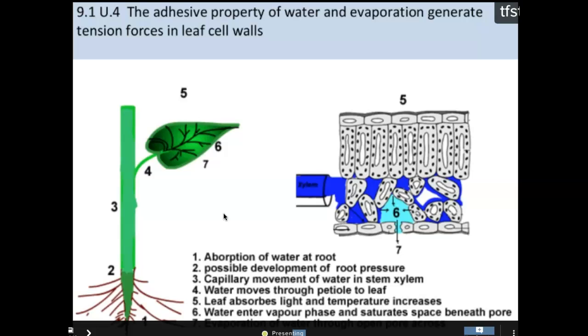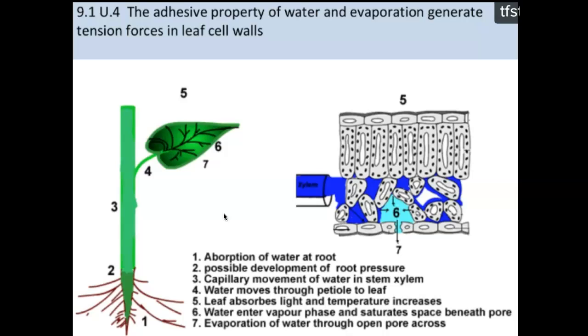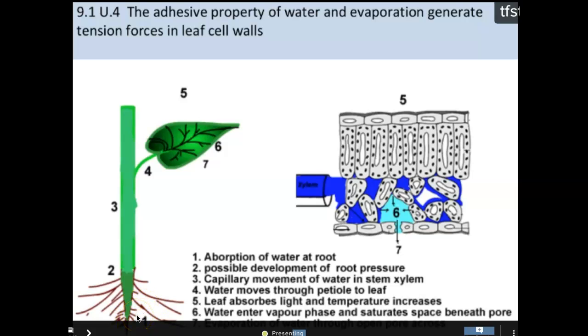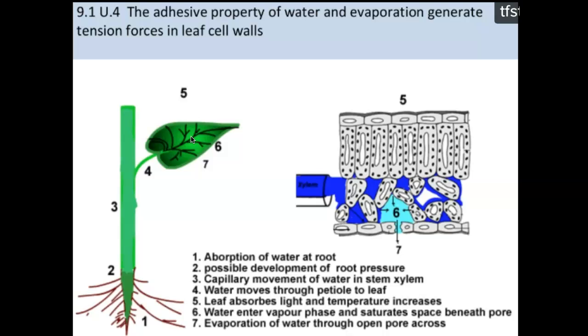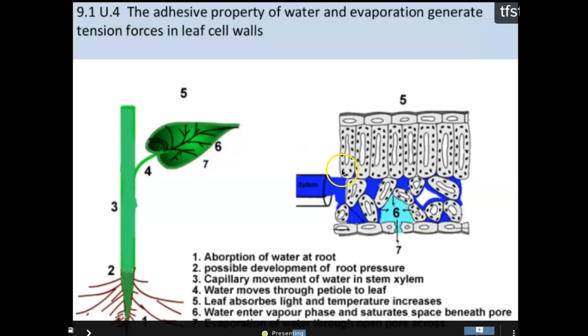So what we're going to look at here is basically the basic structure of the plant, and what you should be aware of. Water gets absorbed through the roots, and this develops into some pressure within the root right here. And this allows for us to have some capillary movement of the water in the stem within the xylem. The water moves through what's known as the petiole, which is the little base here on the leaf or to the leaf. And then the leaf absorbs light and the temperature increases. So the leaf itself is going to warm up. Water vapor, water is going to basically turn into vapor within the leaf because of the heat.